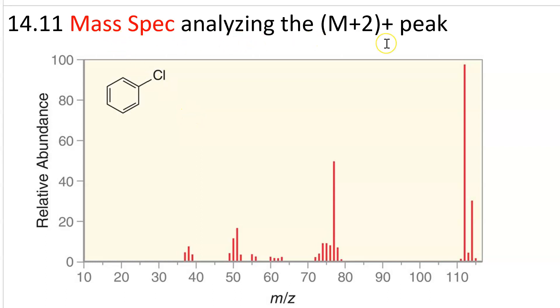Mass spectrometry analyzing the M plus 2 peak. Say you get a spectrum like this, chlorobenzene. We have our molecular ion peak at 112, and we have an M plus 1 peak at 113. But we also have a pretty abundant peak at 114. So we've got an M, an M plus 1, and an M plus 2 peak.